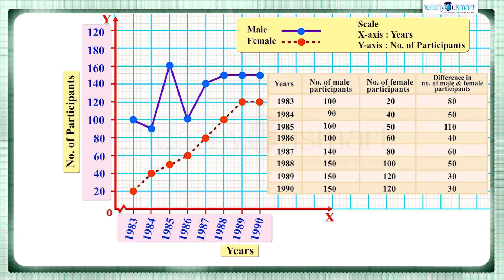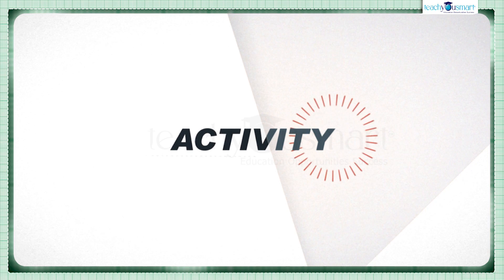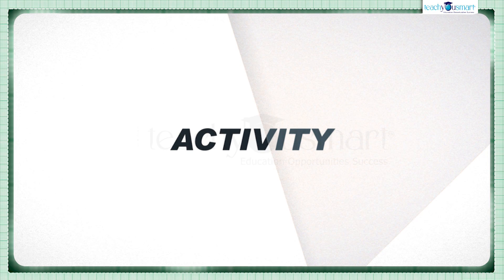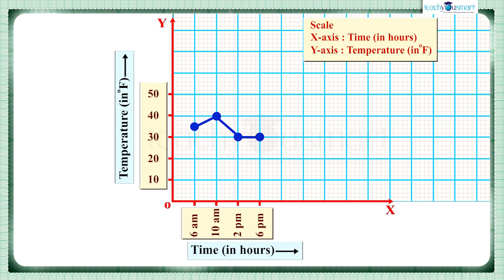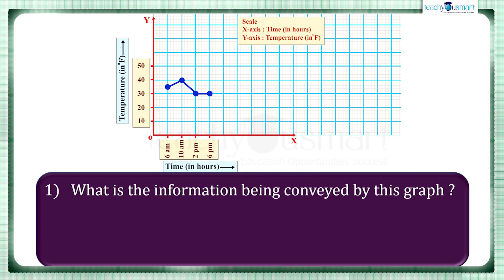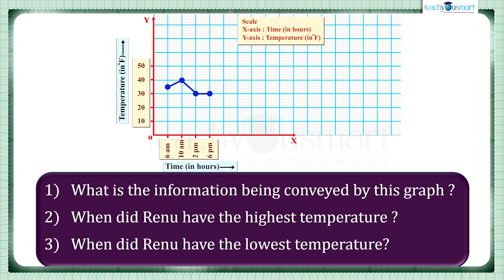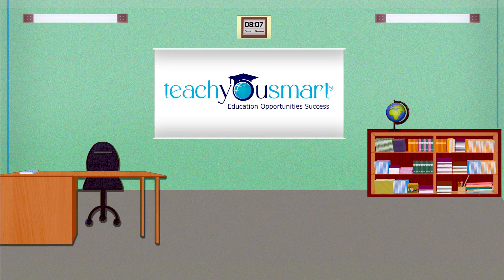By observing all these differences, we can say that the greatest difference was in the year 1985, which is 110. That is, the difference in the number of male and female participants was the greatest in 1985. Before winding up, let's check how much you understood by doing an activity. The following graph shows the temperature of Renew at different times. Read this graph carefully and answer the given questions: What is the information being conveyed by this graph? When did Renew have the highest temperature? And when did Renew have the lowest temperature? That's all for now, see you all in the next class.